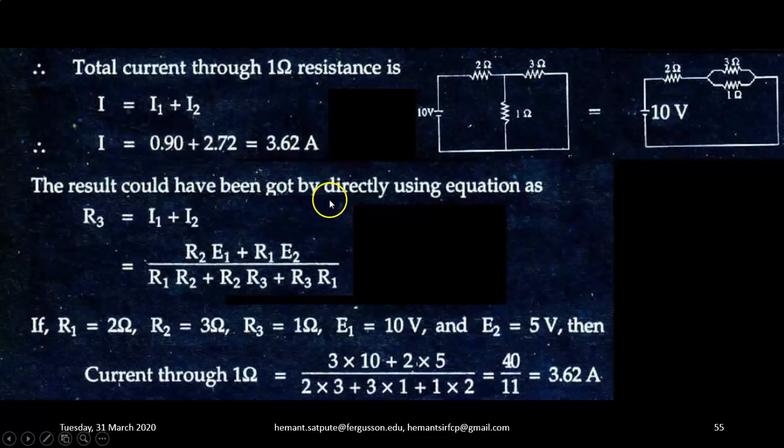The result could have been obtained by directly using the equation as I is equal to I1 plus I2, so that is R2 E1 plus R1 E2 upon R1 R2 plus R2 R3 plus R3 R1. If R1 is 2, R2 is 3, substitute the values and then you will get answer as 3.62 ampere directly by using the direct formula. But instead of memorizing this complicated formula, I will advise go step by step and apply the procedure for superposition theorem and then obtain the answer in the exam.